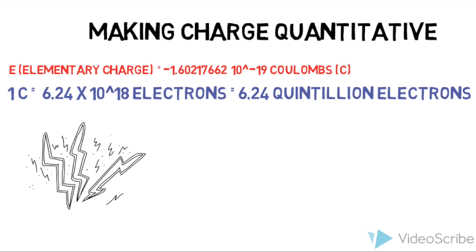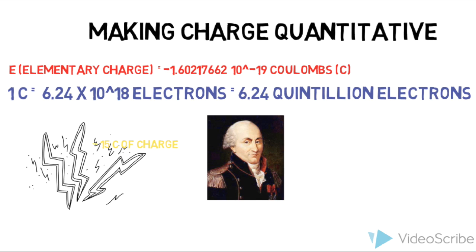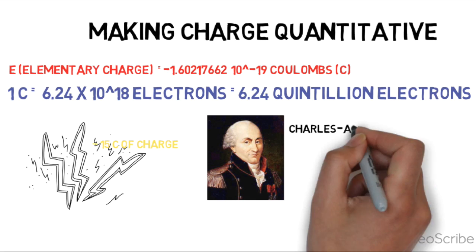A Coulomb is a large amount of charge. For example, the amount of charge in a lightning strike is about 15 Coulombs. Charles Coulomb was a great French physicist who did lots of work in this area. Hence the unit Coulomb.